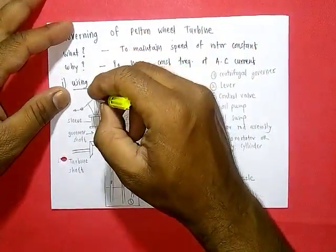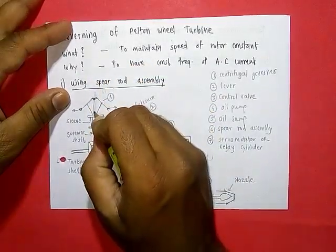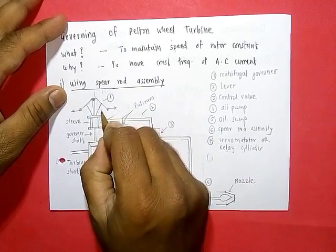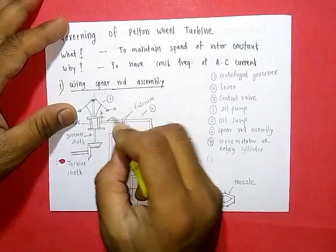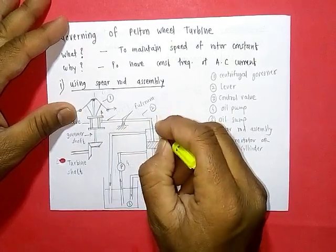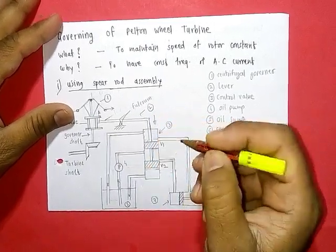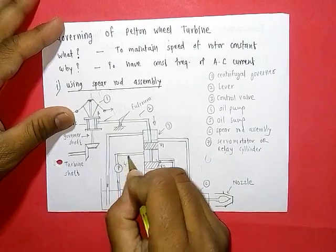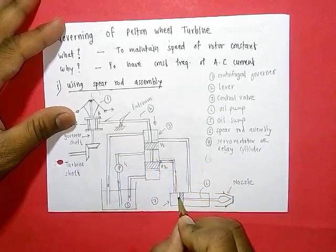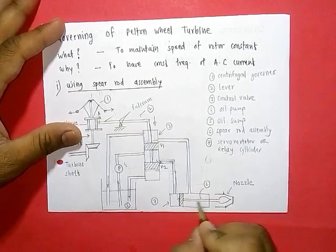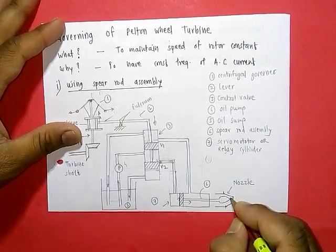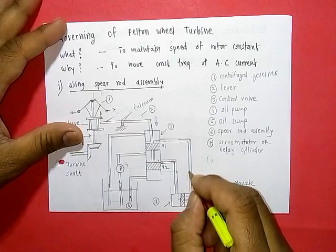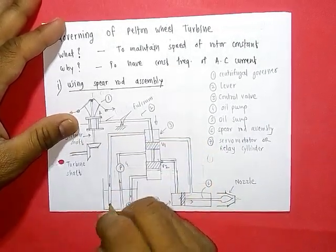As the balls move outward, the sleeve moves upward. When the sleeve moves upward, the lever moves downward, opening valve V2. Oil from the pump flows through valve V2 and pushes the spear rod forward, reducing discharge through the nozzle and hence reducing speed. The return oil passes back to the oil sump.